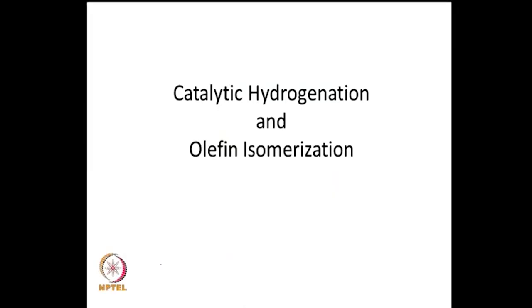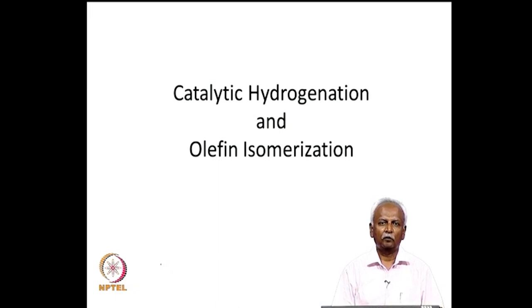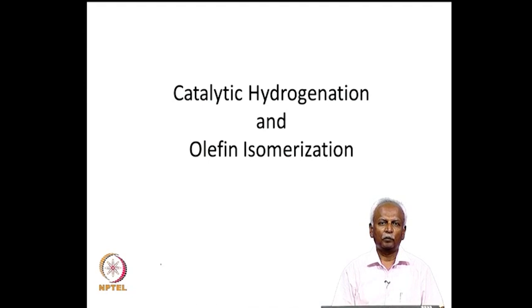Transition metals have been used for hydrogenation reactions for a long time. After the renaissance of organometallic chemistry in the 1950s, it became obvious that a single-site catalyst or a well-characterized organometallic catalyst for hydrogenation could be discovered. This became reality quite soon after the renaissance due to the discovery of ferrocene. Today in this lecture we will discuss the catalytic hydrogenation reaction and a closely related reaction: catalytic isomerization of alkenes.